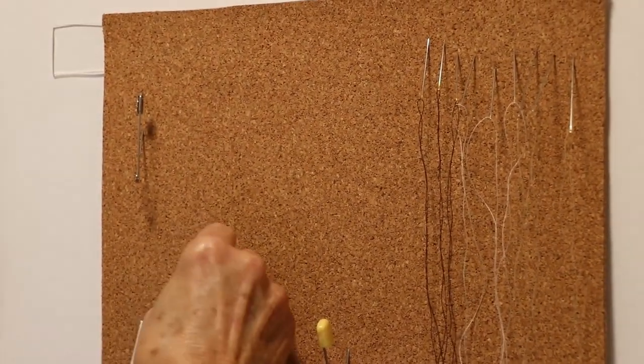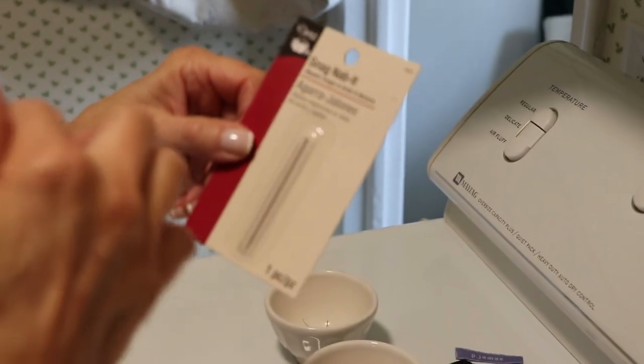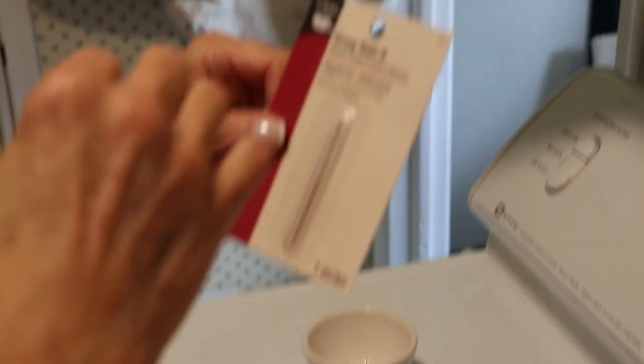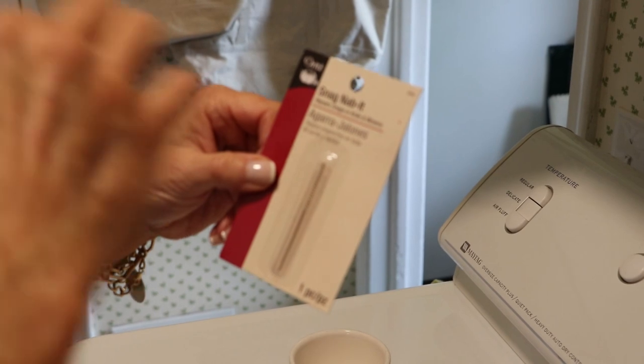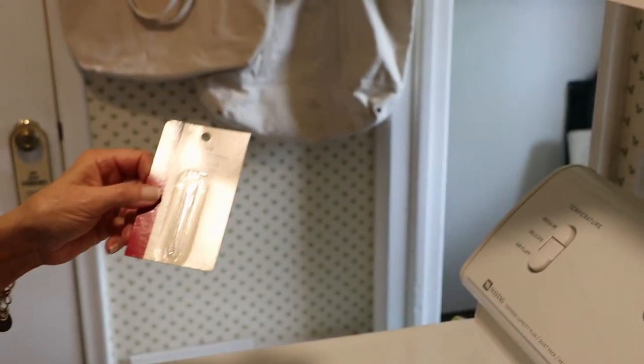Oh, the other thing that's really handy is this thing called the Snag Nabbit. It's for snags and sweaters. So you pull it through from the good side and it takes the snag through to the back so you can't see it.